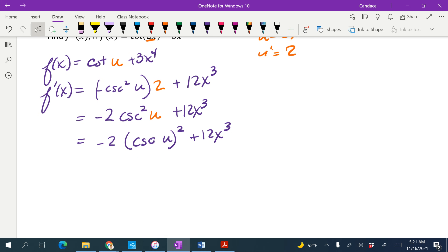Alright, so now I have another u hanging out, so I'm going to call it w. So w equals cosecant of u. Alright, so we now have, I'm going to rewrite it, negative 2. We're going to put a w in here, squared plus 12x cubed.